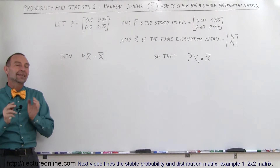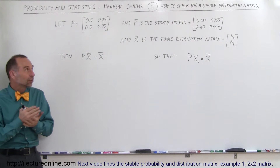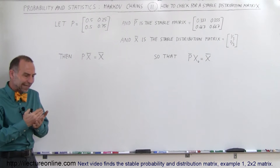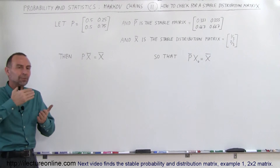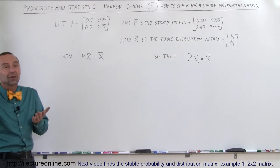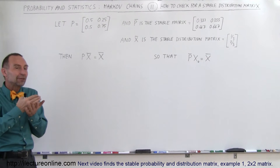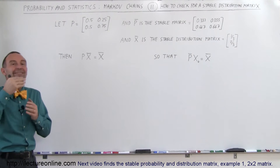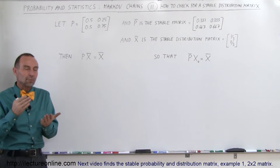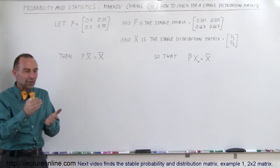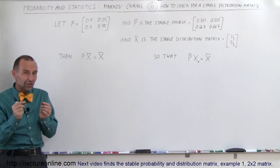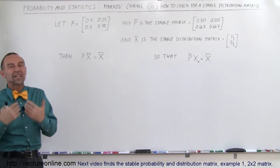Welcome to ElectronLine. Let's find out how we can check to see if we have a stable distribution matrix. A stable distribution matrix is the matrix that, after multiplying the initial state with the probability vector a number of times, the end state eventually becomes stable. In other words, we multiply the initial state by P, then take that result and multiply by P again, repeatedly, until the result becomes the stable distribution matrix.